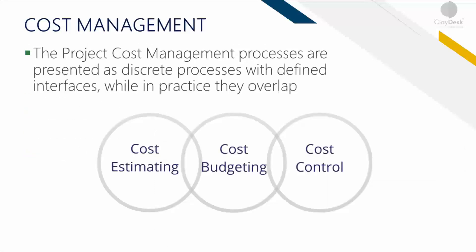Here's the overview from the PMBOK Sixth Edition guide. Sections 7.1, 7.2, 7.3, and 7.4 are the four aspects of project cost management, presented as discrete processes with defined interfaces, while in practice they overlap. Refer to the Sixth Edition guide I provided as a downloadable resource and go through it as homework. Overall, understand conceptually that these areas are part of cost control.